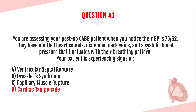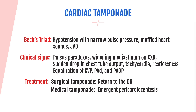Choice B is Dressler's syndrome — a pericarditis that occurs post-MI — with no nonspecific ST elevation or pain on inspiration that improves leaning forward present here. Choice C, papillary muscle rupture, is seen in inferior wall MIs. The patient may present with hypotension, but also crackles and a systolic murmur at the apex — none of which are listed here. So again, this is picture-perfect cardiac tamponade.